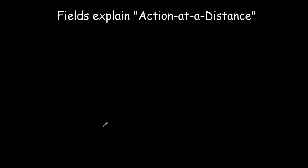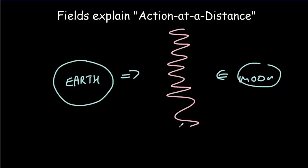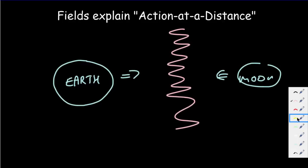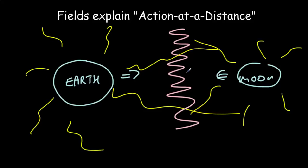The idea of a field was introduced to explain action at a distance. Let's say we've got the Earth over here and the Moon over here. We know there's a force of attraction between them; however, there isn't anything actually between them — that's empty space. So we've got a force without any contact. To explain that, it was postulated that there must be some sort of field. This field would interact with the Moon and cause an attraction on it, and interact with the Earth and cause an attraction on it. So fields explain action at a distance.